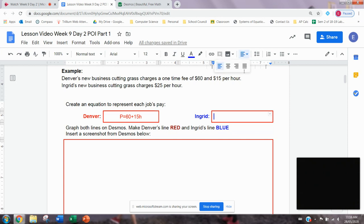Ingrid will be a different equation because she doesn't have an initial fee. She doesn't have a flat fee. She just has $25 per hour. So for Ingrid, her pay will equal no initial, no flat fee, just 25 times the number of hours.